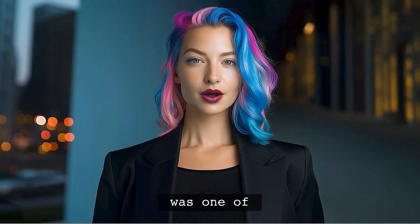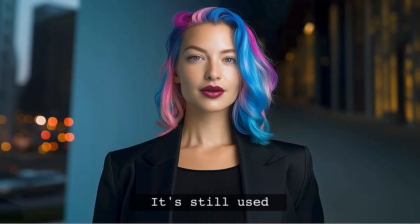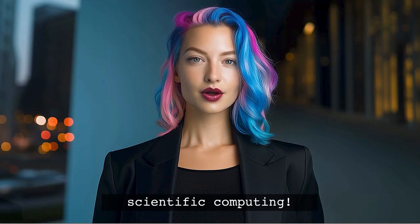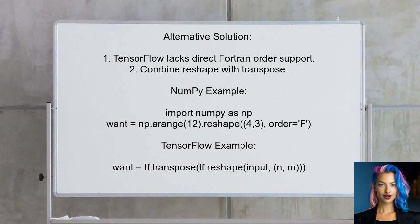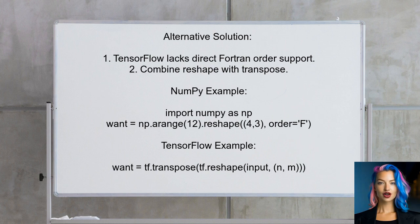Fun fact: did you know that Fortran was one of the first high-level programming languages? It's still used today, especially in scientific computing. Now let's look at the answers provided by other users. This user points out that TensorFlow does not directly support Fortran or column-major ordering for reshaping tensors. However, they offer a straightforward solution by combining reshape with transpose, demonstrating this first with NumPy and then providing the equivalent TensorFlow code.